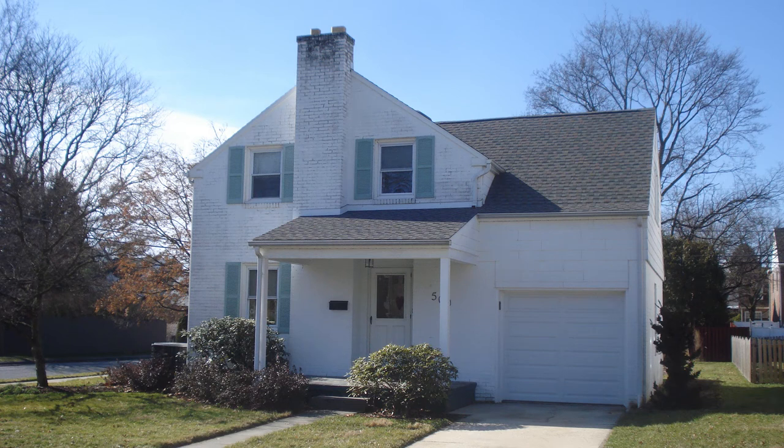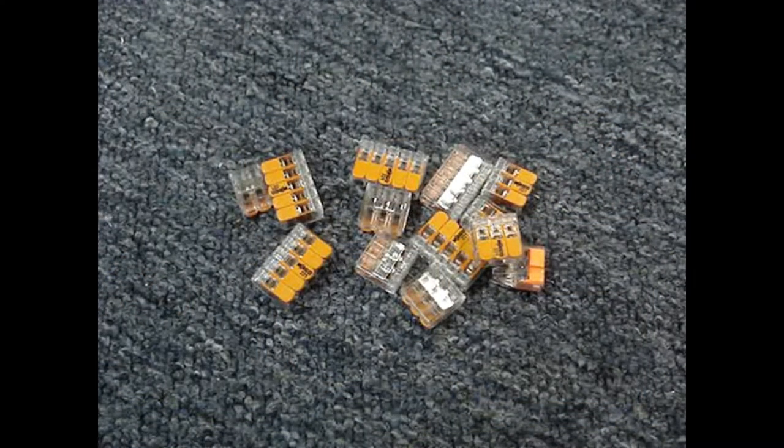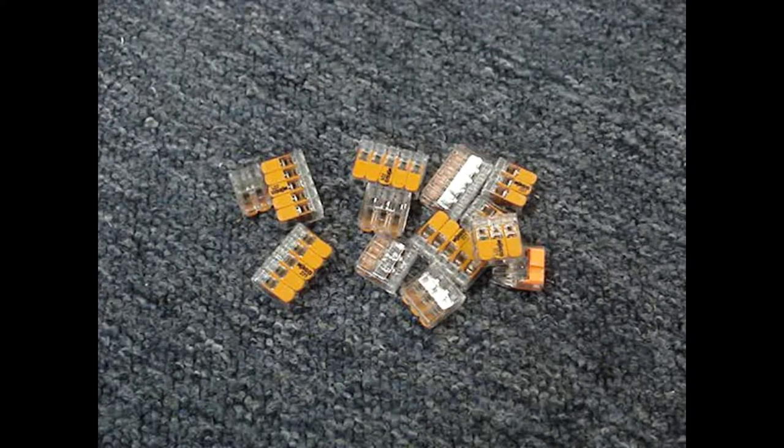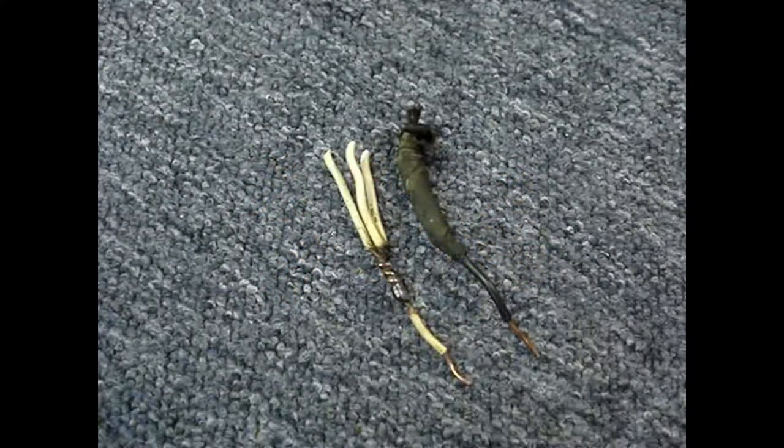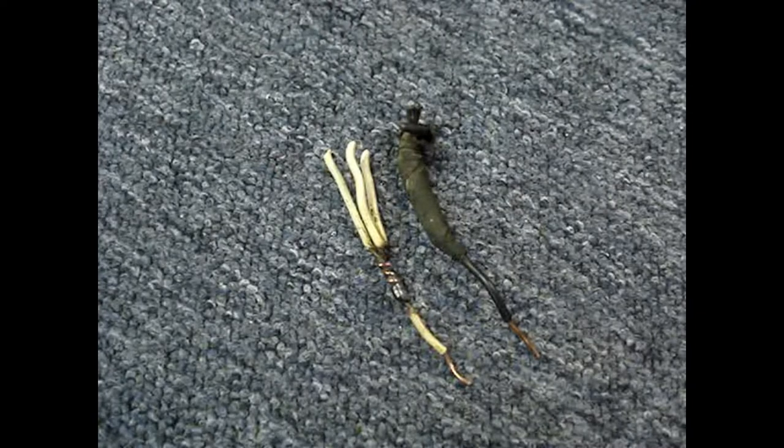I'm in the process of rewiring a house built in 1952. WAGO 221 series lever nut splicing connectors are the perfect solution for temporary splices on short wires and electrical boxes after cutting the original soldered splices.